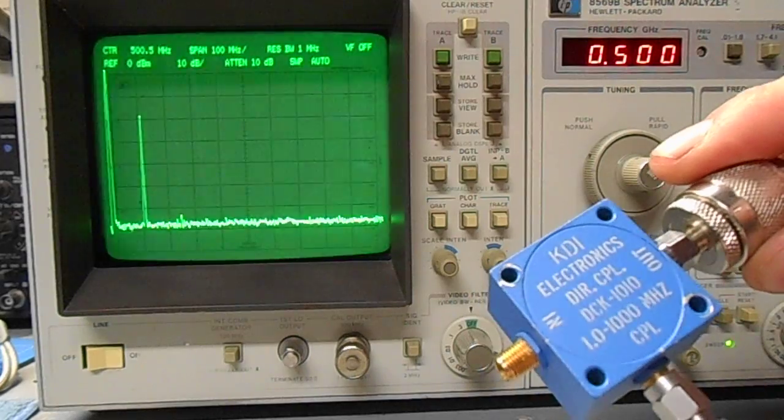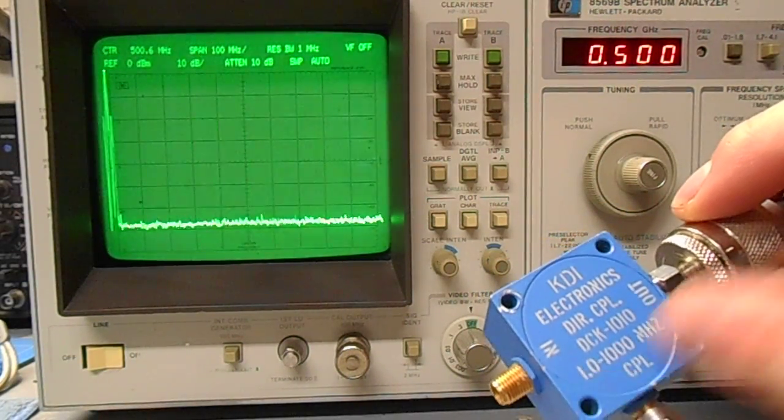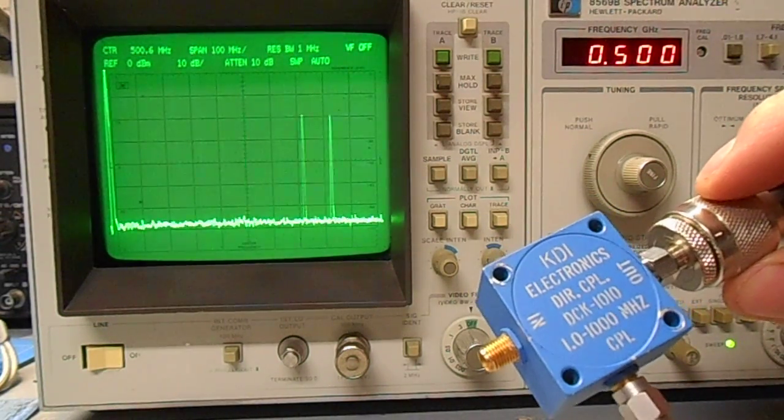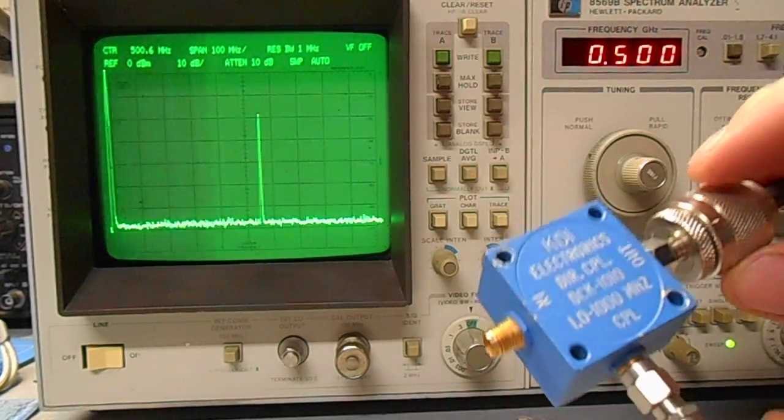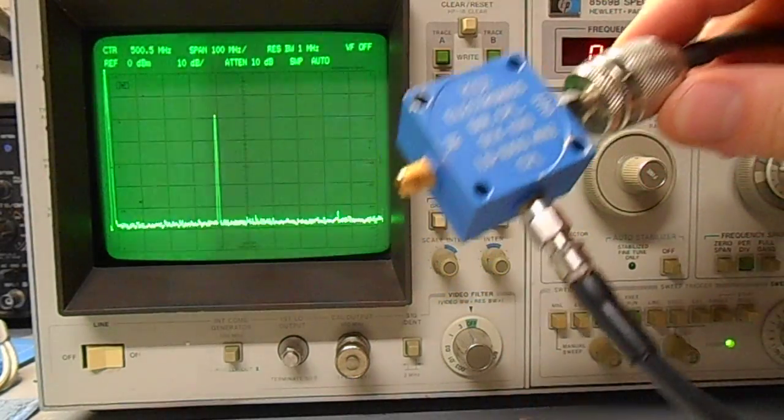This is a 10 dB coupler, normally for measuring forward power, but by connecting it backwards we can measure the reverse or the reflected power coming from our antenna. This bottom cable right here is going to the spectrum analyzer.